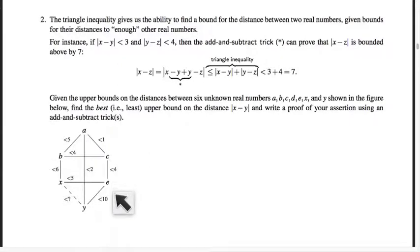And we do happen to know that the distance, for example, from x to e does have an upper bound of five. So x is no more than five units away from e, x is no more than six units away from b, b is no more than four units away from c, and so on and so forth.